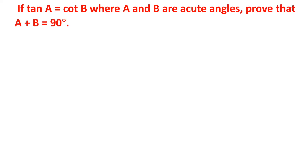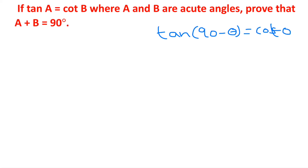If tan A equals cot B, where A and B are acute angles, prove that A plus B equals 90 degrees. We know that tan(90 minus theta) equals cot theta. So given tan A equals cot B, we convert cot B as tan(90 minus B).